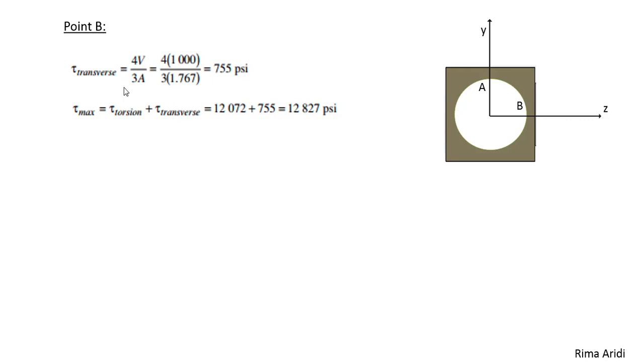And we substitute the values in this formula in order to determine the shear transverse stress. Also, there is torsional stress on point B, as it is on point A. We determined it before. So, we just have to add torsional shear stress and transverse shear stress in order to determine the total shear stress on B.